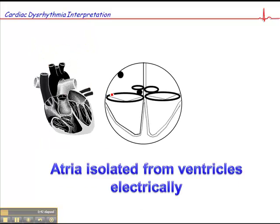If you'll recall from the last presentation, I mentioned that there are these fibrous connective tissue rings that support the AV valves and the pulmonic and aortic valves. What these rings do essentially is isolate the atria from the ventricles. So the only link — this is the SA node here — between the atria and the ventricles is this AV node and the bundle of His, which then bifurcates into the right and left bundle branches.